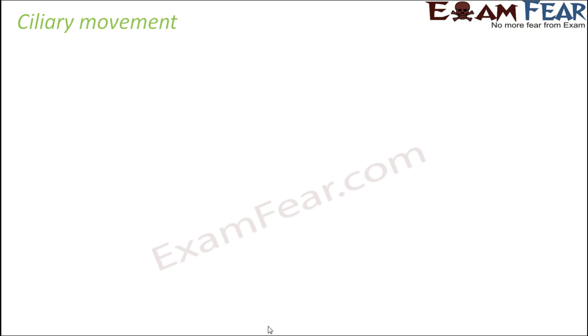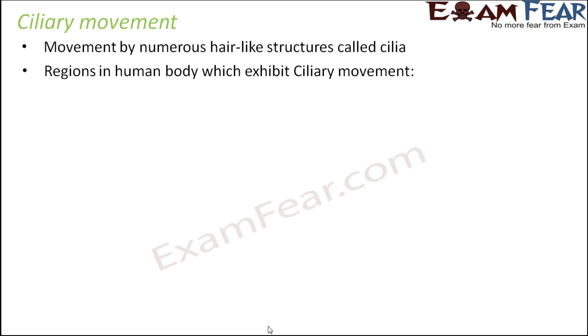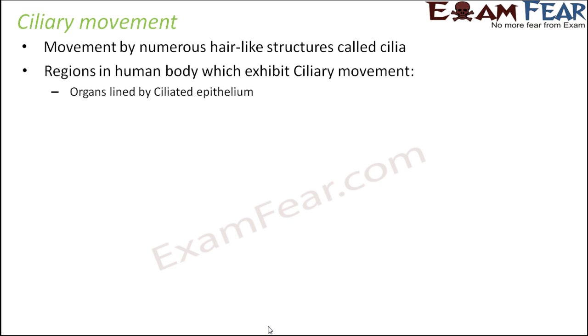Let us look at the next type of movement called ciliary movement. There are certain cells inside the human body which possess cilia, and therefore they have ciliary movement. These are movements by numerous hair-like structures called cilia, similar to what is seen in paramecium — small hair-like structures on the outer surface that move and help other substances move. Ciliary movement is seen in organs lined by ciliated epithelium.